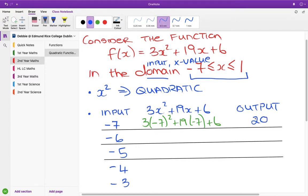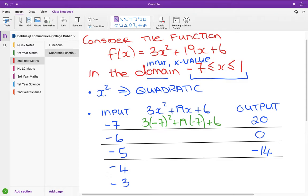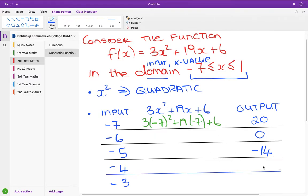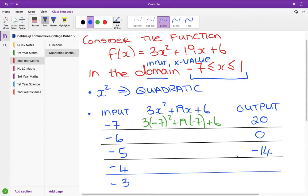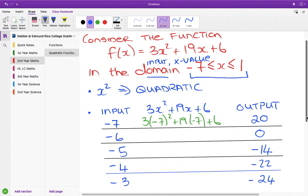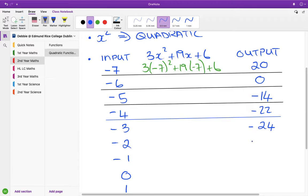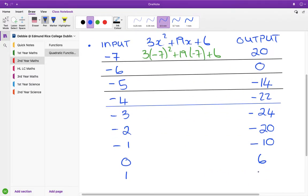So for the answer to that, for the answer to minus 6, it's 0. For the answer to minus 5, it's minus 14. For the answer to minus 4, I'm getting minus 22. For the answer to minus 3, I'm getting minus 24. Minus 2, I'm getting minus 20. Minus 1, minus 10. 0 is giving me an answer of 6 and 1 is giving me an answer of 28.